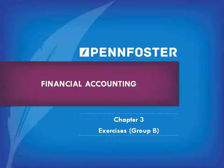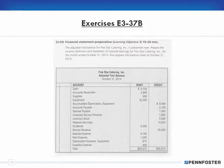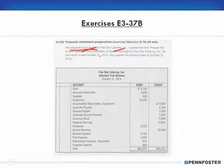Welcome back students taking financial accounting. In this series of videos we are working on chapter 3, the exercises for group B assigned in the digital study guide, and we are working on problem 3-37. This exercise presents an adjusted trial balance for Five-Star Catering and asks us to prepare the income statement, statement of retained earnings for the month ended October 31st, and also the balance sheet for October 31st.